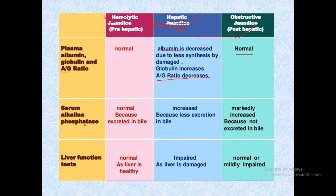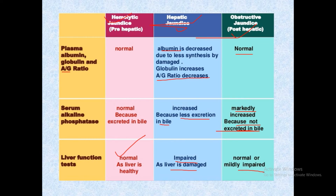Serum alkaline phosphatase is normally excreted in bile, so it is normal in hemolytic jaundice. In hepatic jaundice, it is increased due to reduced bile excretion. In post-hepatic jaundice, it is markedly increased because bile excretion is blocked. Liver function tests are normal in pre-hepatic jaundice, impaired in hepatic jaundice, and normal to mildly impaired in post-hepatic jaundice.